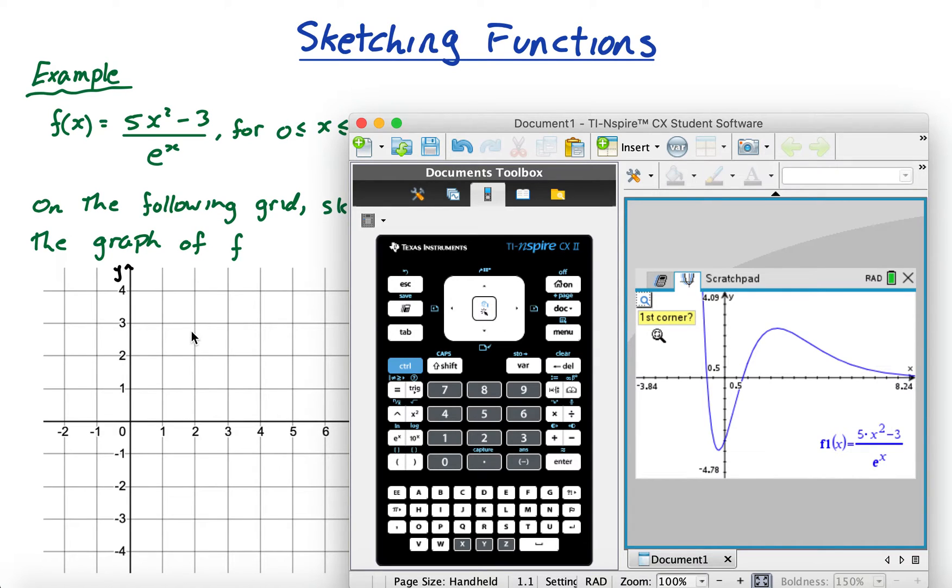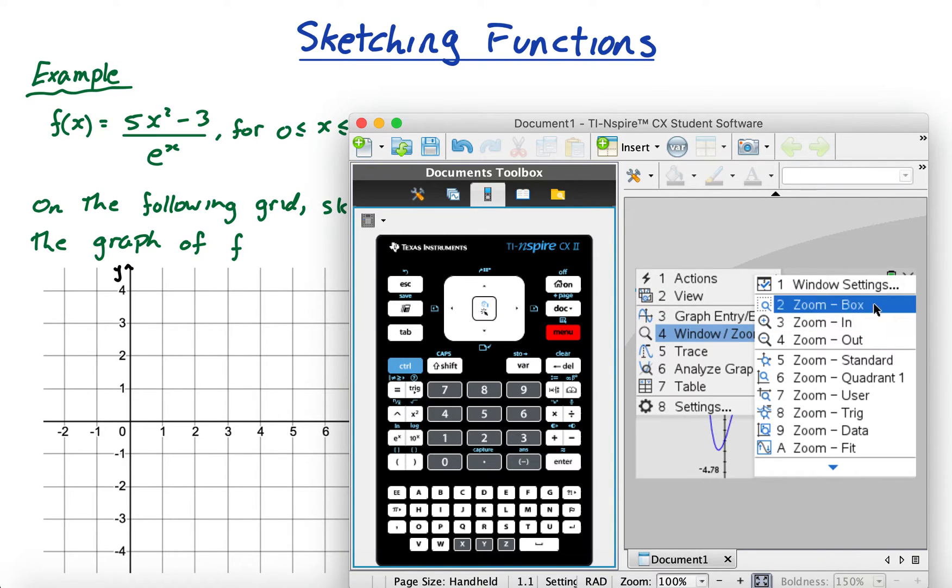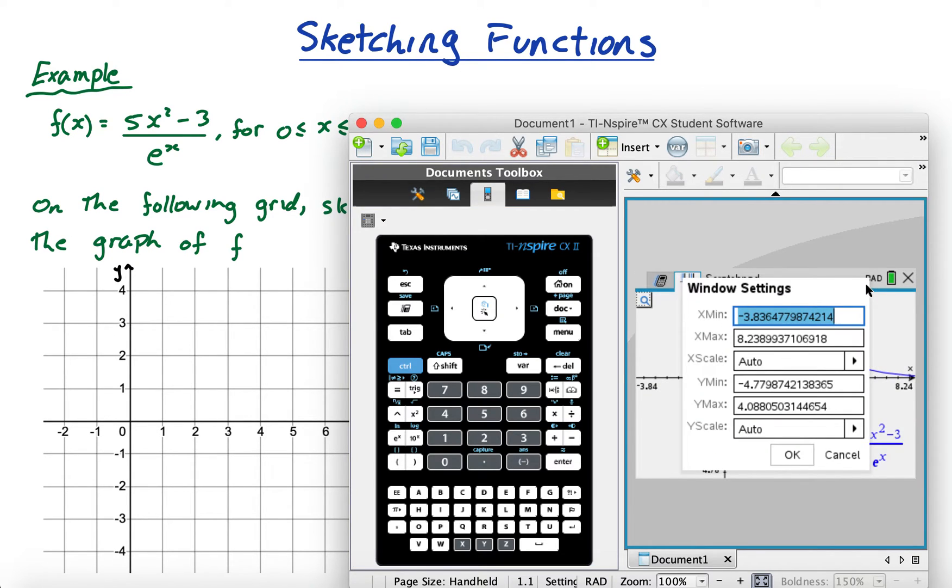But when I'm sketching I usually use the window settings one here, and I think it's a nice idea to put in whatever they give you. So here they're going from negative 2 to 7, so I'm going to go from negative 2 to 7, even though I won't be sketching anything over to the left of zero. Still nice to just line up the two. So negative 2 to 7, and this I'll go from negative 4 to 4.